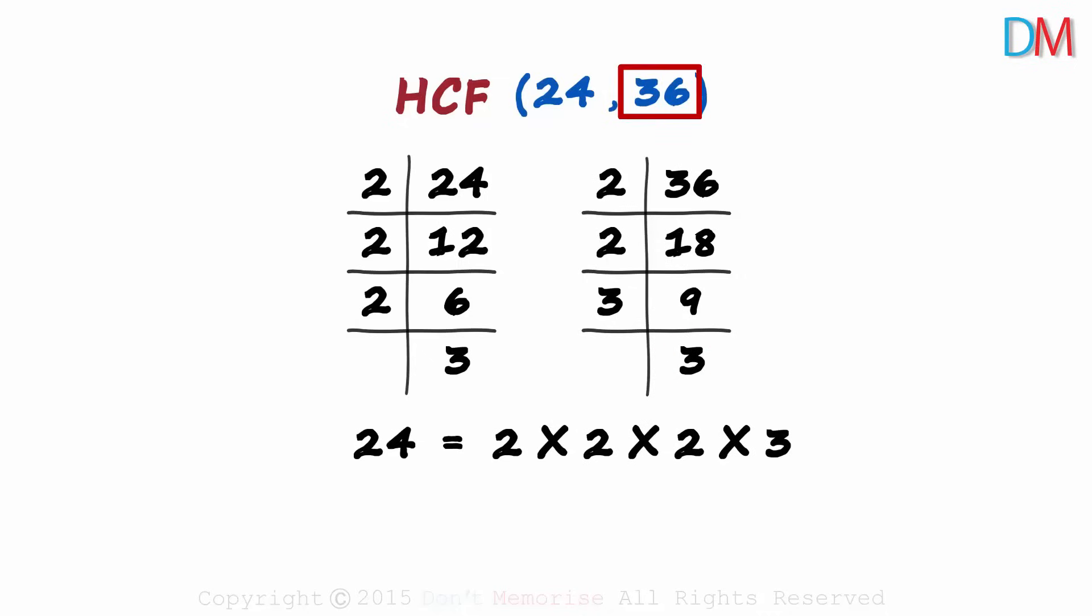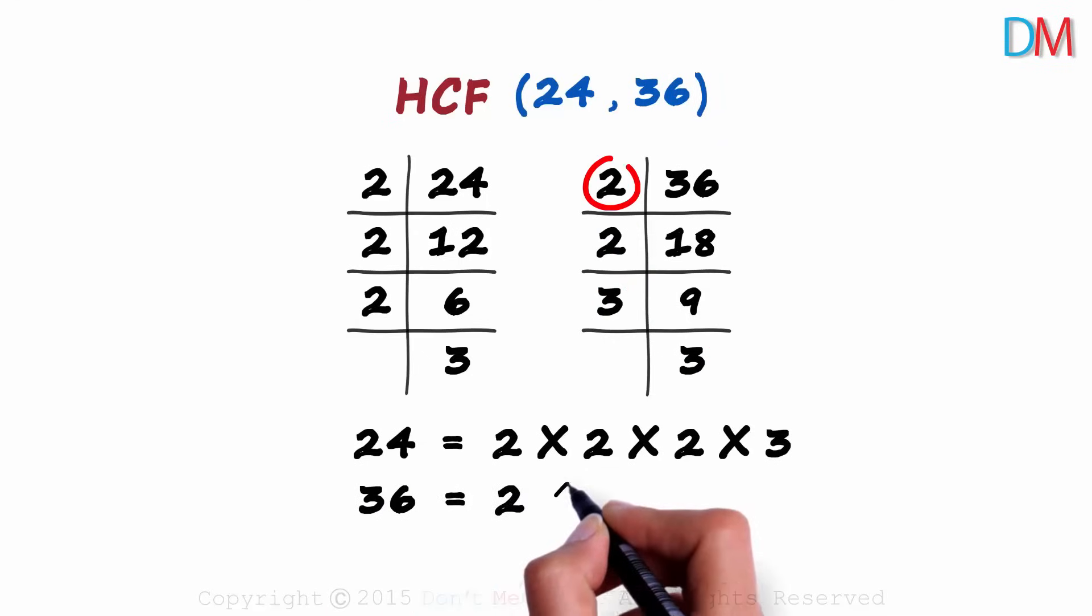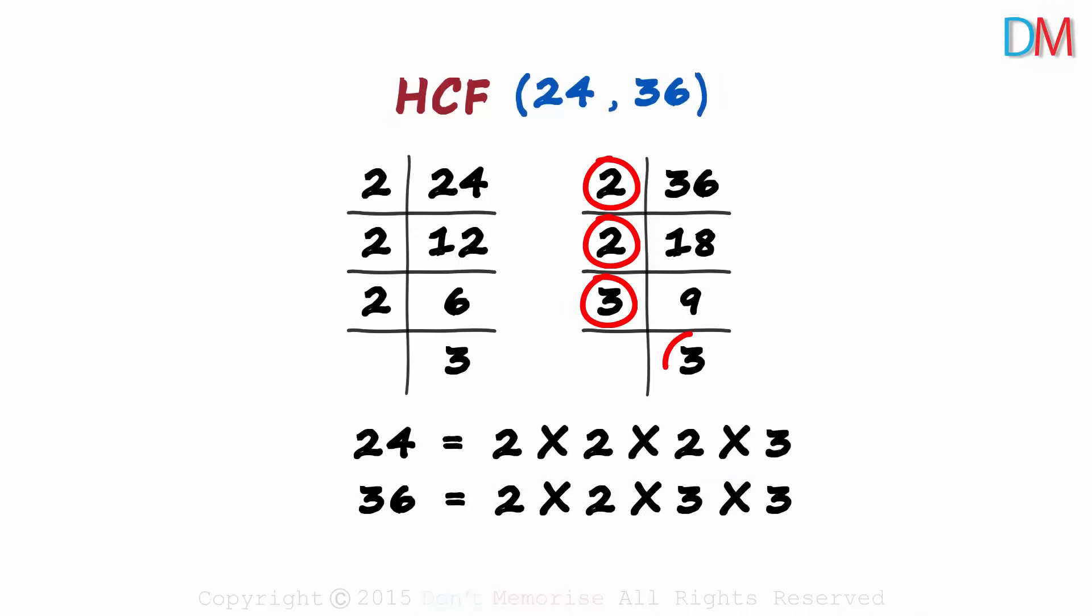36 can be written as the product of these 4 numbers. 36 is equal to 2 multiplied by 2 multiplied by 3 multiplied by 3.